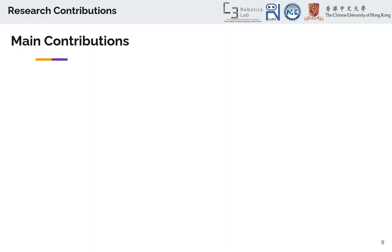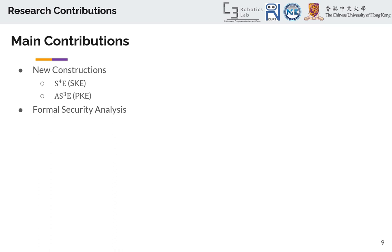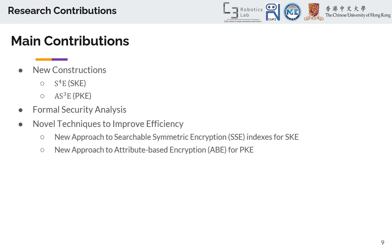The main contributions of the paper are to introduce two new constructions, one based on symmetric and one on asymmetric channels. They provide a formal security analysis to prove security under different scenarios. They also introduce new approaches for both symmetric and attribute-based encryption to improve the efficiency of the implementation.